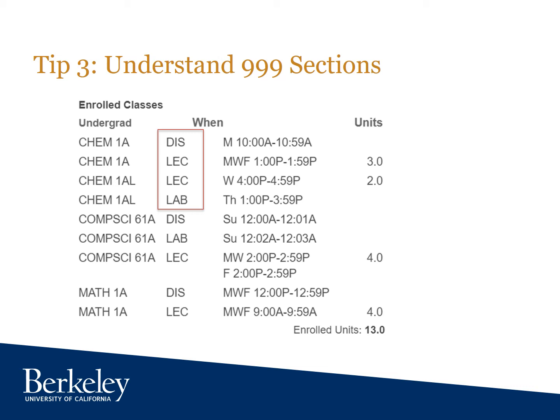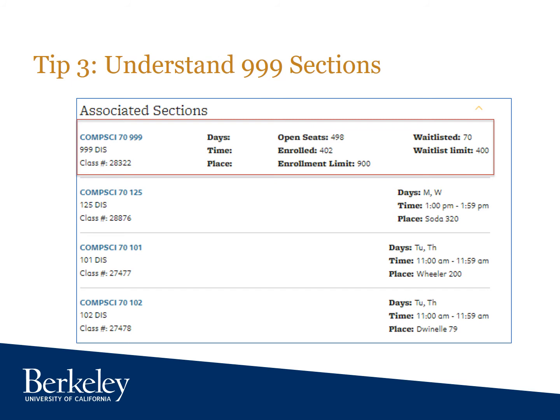In order to simplify enrollment for most computer science classes, we've created placeholder sections called 999 sections. You'll notice that these sections do not have any location associated with them and they all take place on Sundays around midnight, with a duration of about a minute. Some students are confused by the fact that they can see the actual discussion or lab sections in addition to 999 sections. We make the actual sections visible for planning purposes, while the enrollment system will force you to enroll into the 999 sections and the lecture.